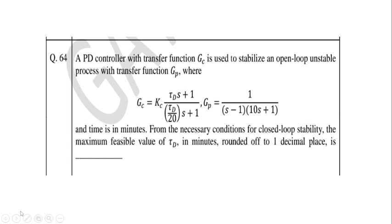Here the question is: a proportional derivative controller with transfer function G_C is used to stabilize an open-loop unstable process. So there is one open-loop unstable process, and in order to stabilize that we are going to use the proportional derivative controller, and that is the transfer function of the proportional derivative controller.